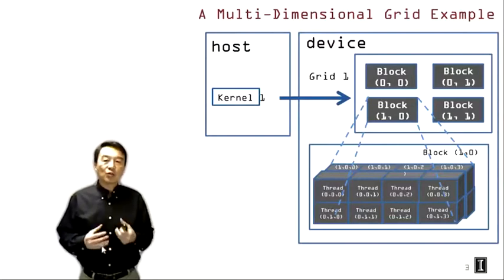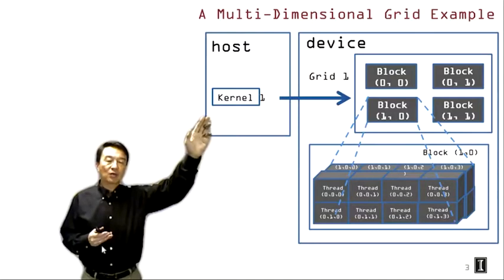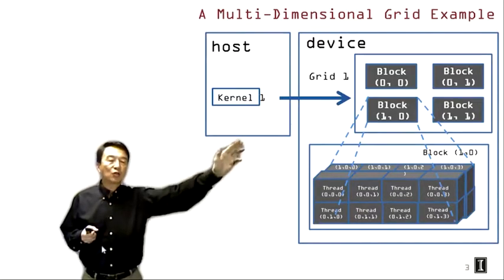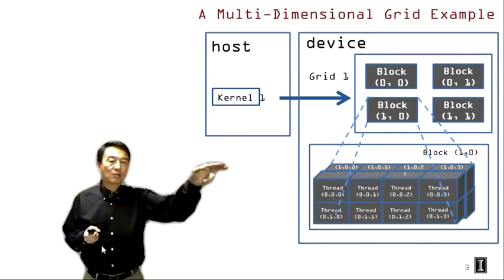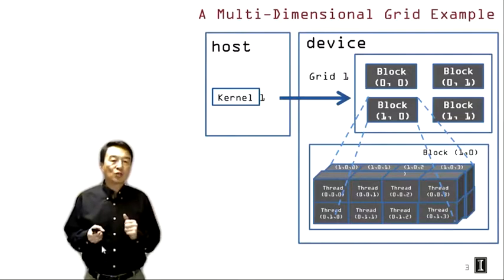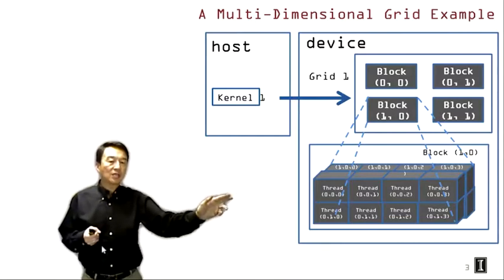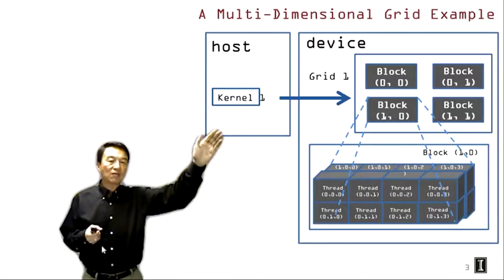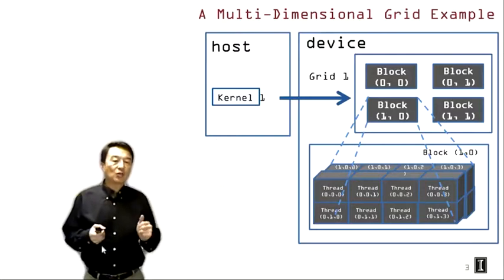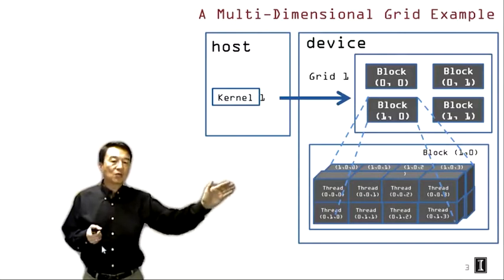This picture was shown earlier in the introductory lecture, where we assume that the host has launched kernel 1, and this generates a grid of threads. We assume that the user has specified a two-dimensional grid, which is reflected by the two-dimensional indices of the blocks, and each block has three-dimensional threads. The convention we're going to be using is that for a two-dimensional structure we show x and y indices — the first index will be x, the second index will be y — and for a three-dimensional structure we show indices in the order of x, y, and z.